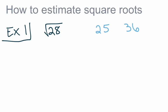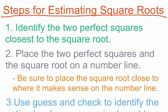Those are the two perfect squares closest to the square root of 28. Now what we want to do is place these three numbers on a number line. I'm going to go ahead and make a number line, and I'm going to place the square root of 25 over here and the square root of 36 over here. That's the second step: place the two perfect squares and the square root on a number line. When placing the square root on the number line, we have to be sure to place it close to where it makes sense.